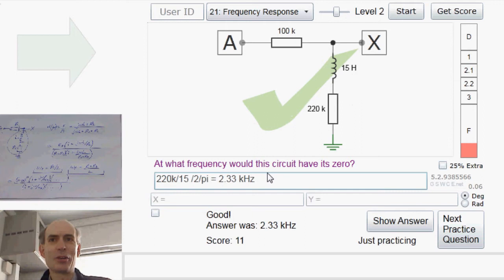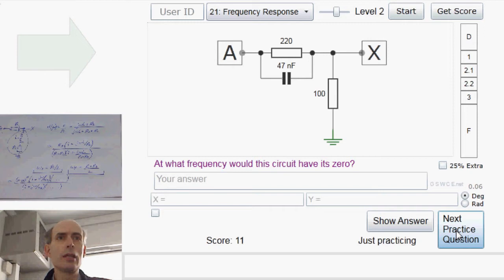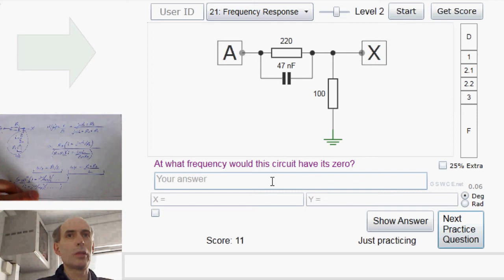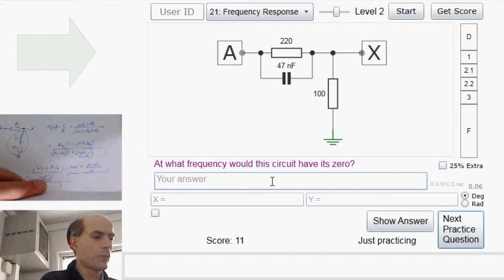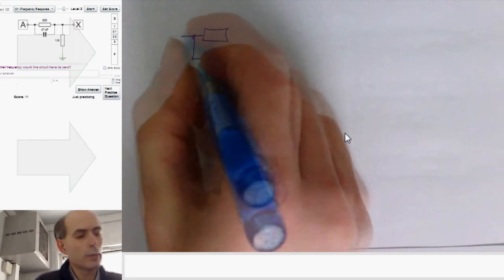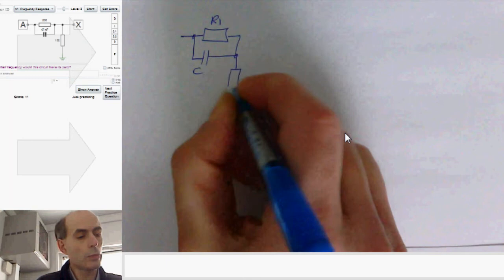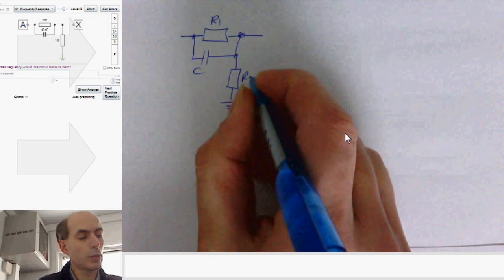Right. Hopefully that gives you the kind of idea. Another one here, we've got a capacitor in parallel with a resistor, and a resistor going down to ground. So we can apply the same kind of arguments. In this case, we would have, I'll call that R1 and that C, and then we would have R2 down here.